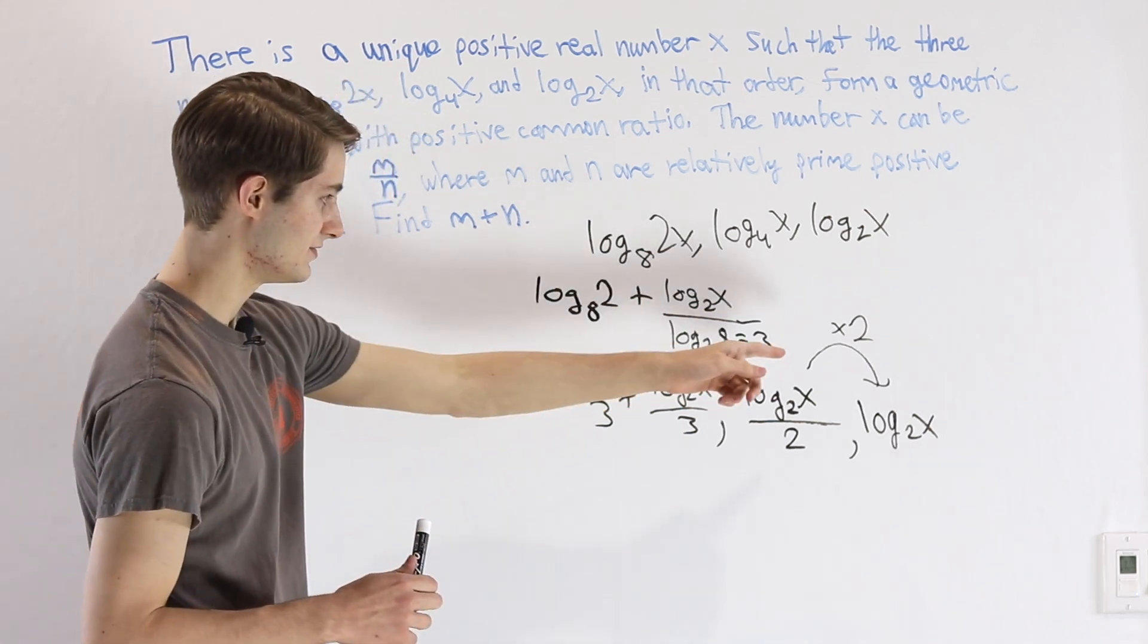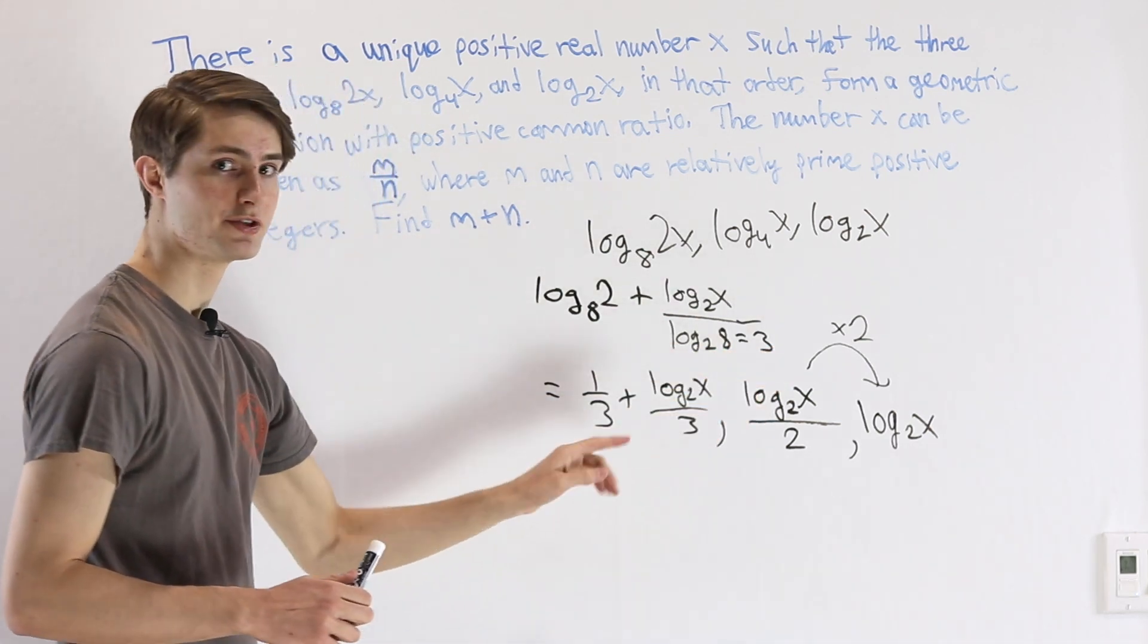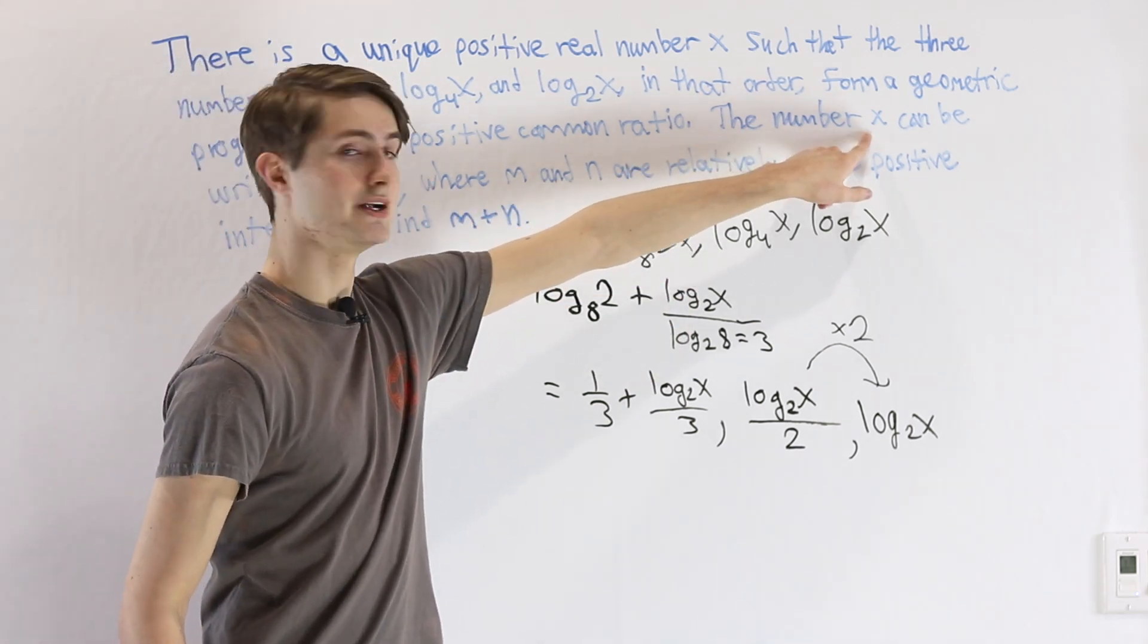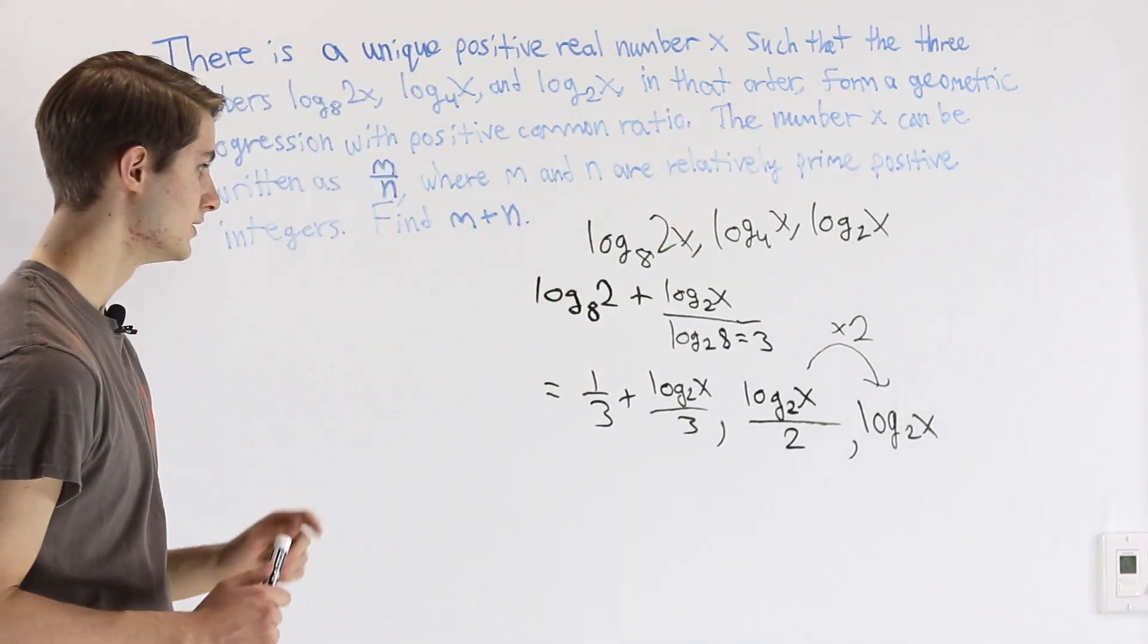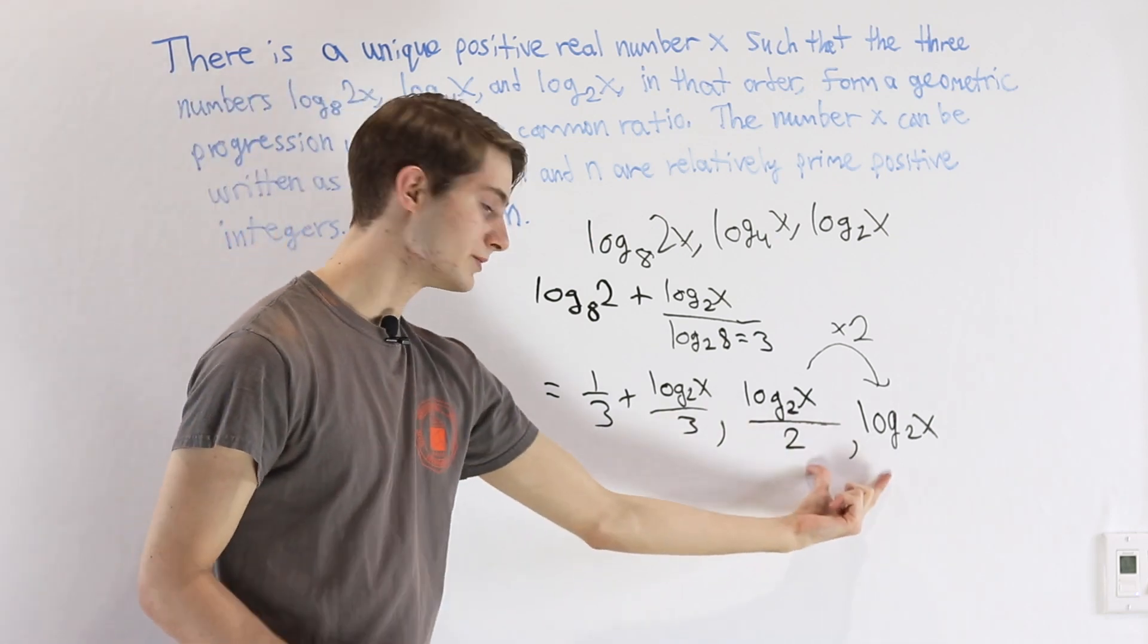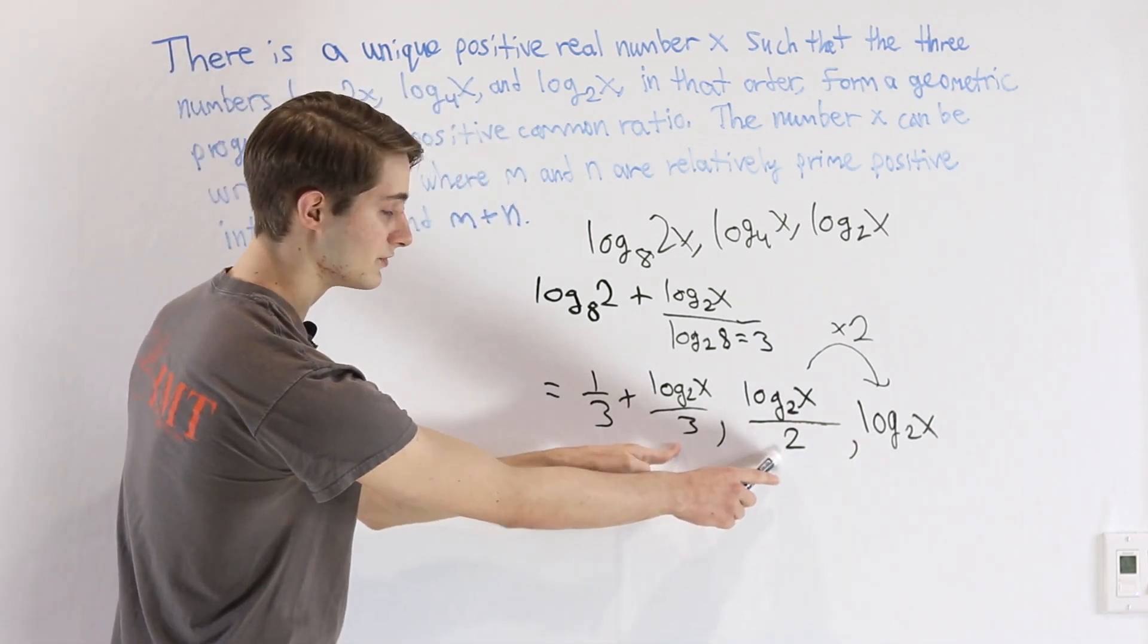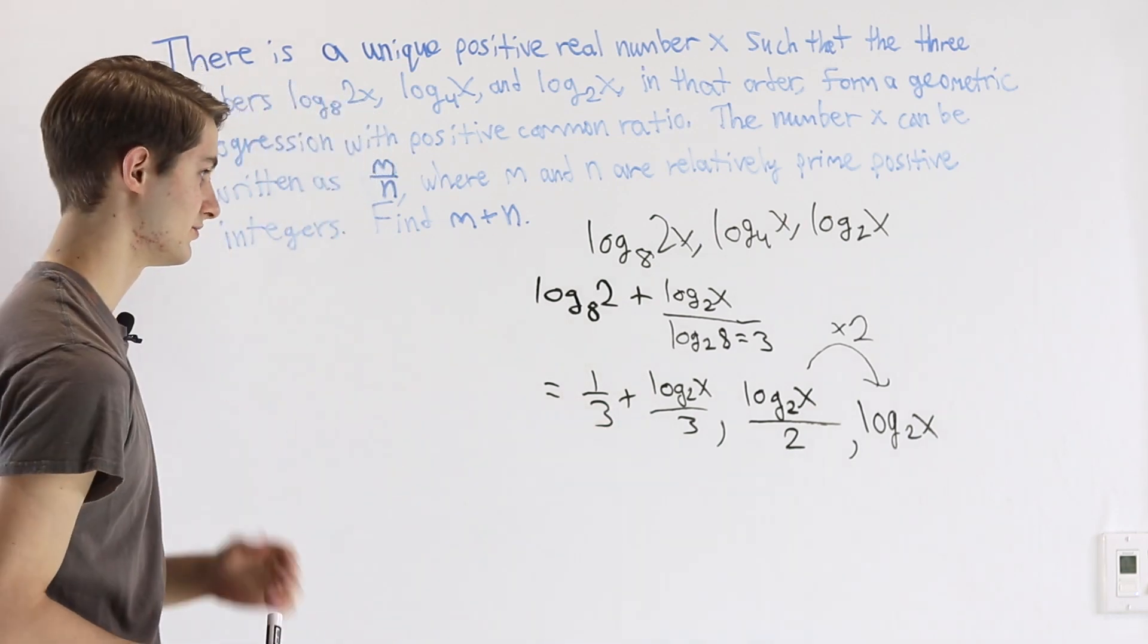That means that we can use this information to solve back for the value of x, because remember the final thing we want to figure out is the number x. So we already used the relationship between these two terms, so let's use the relationship between the first and second term to solve for x.